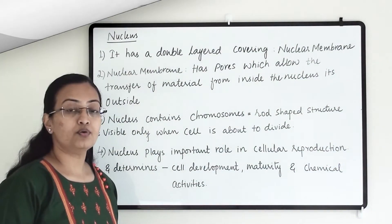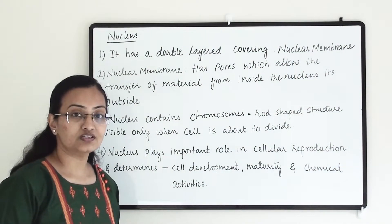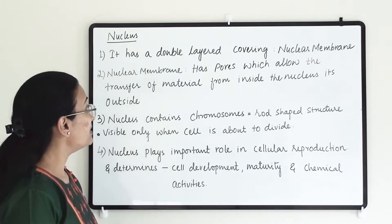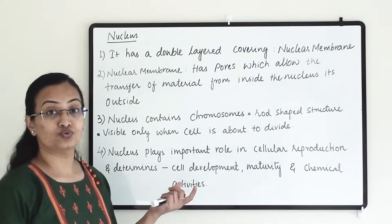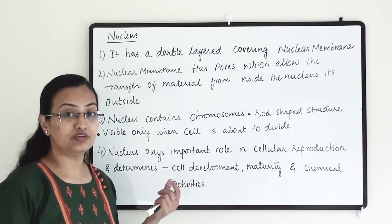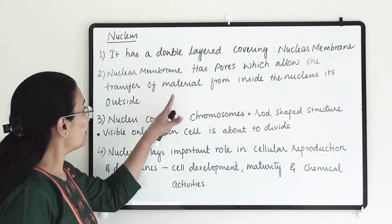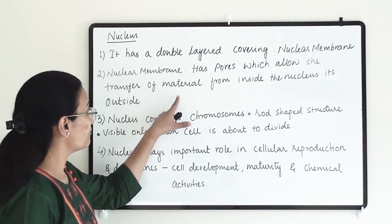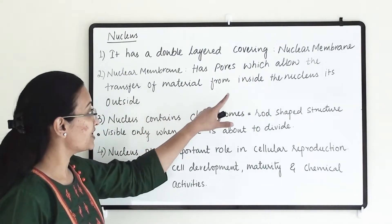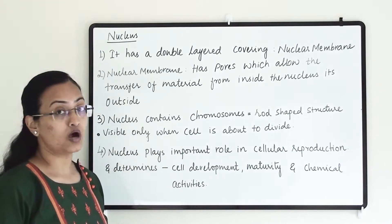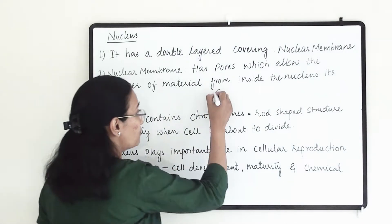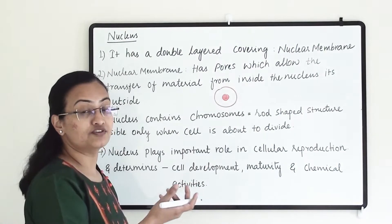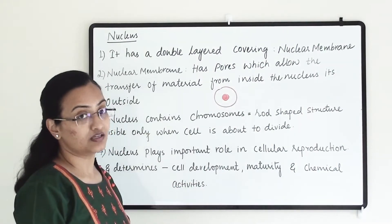Another important structure in the cell is the nucleus. It has a double-layered covering known as the nuclear membrane. The nuclear membrane has pores which allow the transfer of material from inside the nucleus to outside. The nucleus is within the cell and it controls the activity happening in the cell.